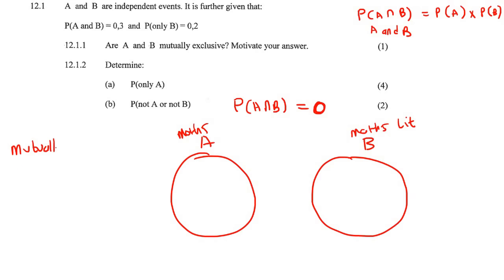If we have mutually exclusive, it means that the probability that someone does maths and maths literacy is 0. So we say P of A and B equals 0. But now they've told us that P of A and B is not 0. They've told us that it's 0.3. So we would say no, it's not mutually exclusive, because P of A and B is not equal to 0.